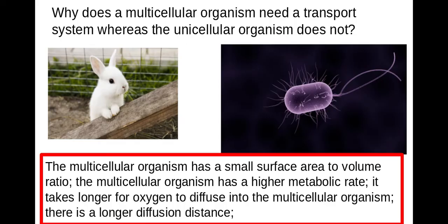So a very typical exam question with this is, why does a multicellular organism, such as a rabbit in this case, need a transport system, such as a circulatory system, whereas a unicellular organism, such as a prokaryote or a bacteria, doesn't? And the reasoning behind this is because in a multicellular organism, such as ourselves or the rabbit, we have a relatively small surface area to volume ratio in comparison to the prokaryote.